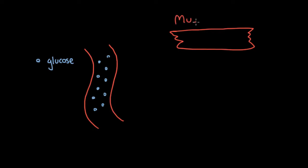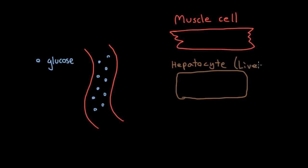And the first of these cells is a muscle cell. The second kind of cell is a liver cell which we also call a hepatocyte. Whenever you see hepato you can think of liver. So a hepatocyte which is a liver cell. And the third kind of cell where you're going to store the glucose is a fat cell which is also called an adipocyte. Adipose tissue is fat. So an adipocyte is just a fat cell.